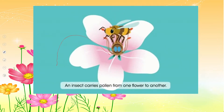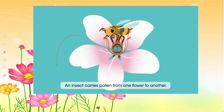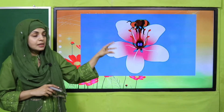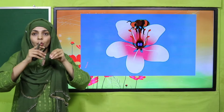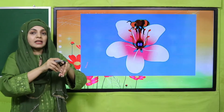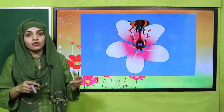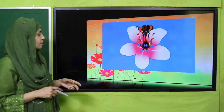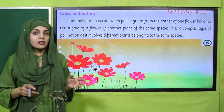Now we will discuss cross-pollination. When insects are drinking nectar from a plant, pollens get attached to their feet. Then they move to another flower of the same species, and the pollen on their feet gets transferred to the other flower. This is called cross-pollination because there is an external insect involved. Now let's discuss cross-pollination on page number 39.